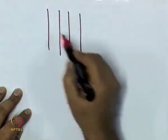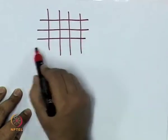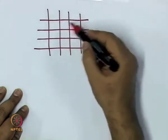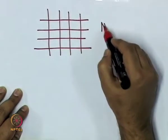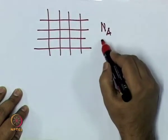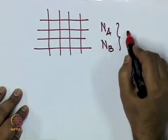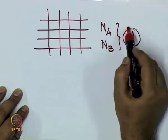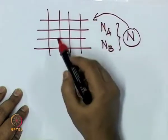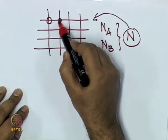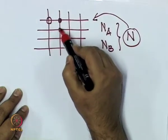We took a lattice and decided to put some number of A atoms and some number of B atoms on it. The number of A atoms was NA, the number of B atoms was NB, and NA plus NB together is N, the total number of sites available. I represented A atoms by open circles and B atoms by closed circles.